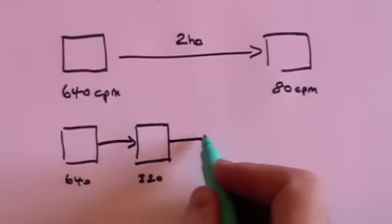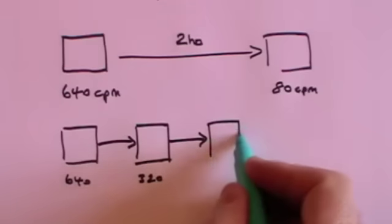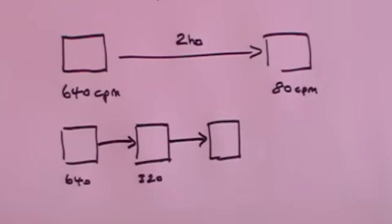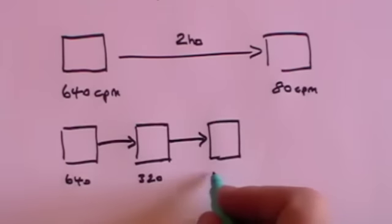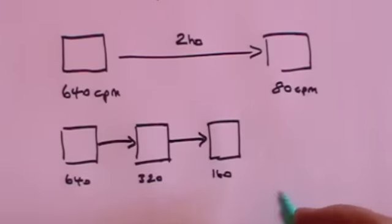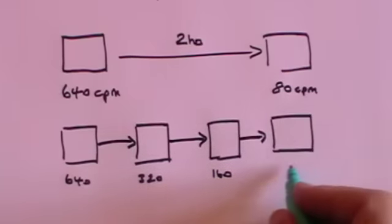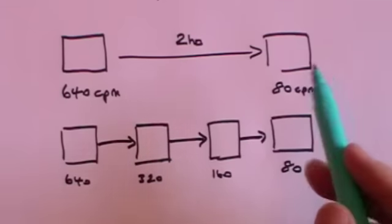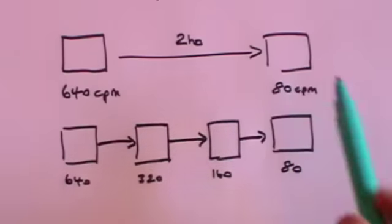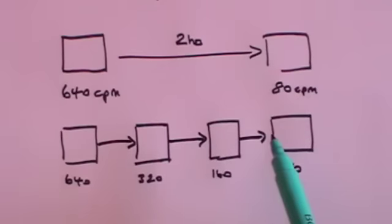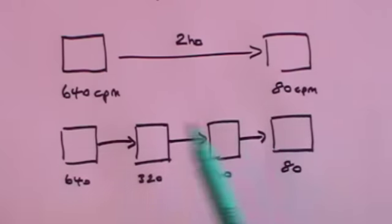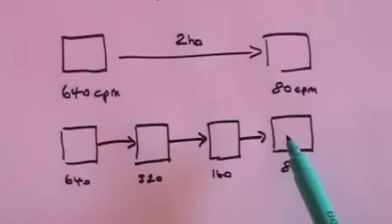After the next half-life you would expect the activity to halve again, so now it will be 160. And after the next half-life you would expect it to halve again and now it will be 80 which is what you were given. So it took three half-lives to get from 640 down to 80.